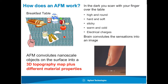Let me tell you how an AFM works. Imagine you sit at a breakfast table, close your eyes, and move your finger over the table in a raster scanning mode, line by line. You would notice different properties: high and round structures, hard versus soft structures, warm versus cold areas, and hopefully not electrical charges because that's too dangerous. With these sensations, you can make an image in your mind of the surface and its properties. This is what the AFM does.